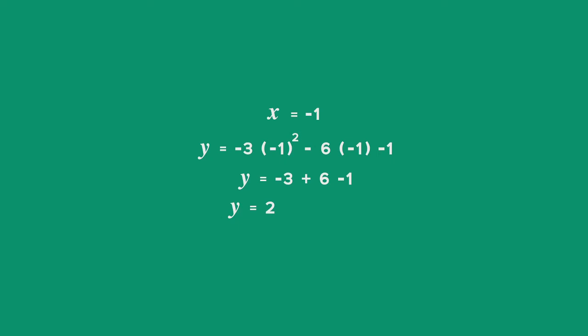Remember, you need to find the coordinates of the turning point written as an ordered pair of x and its corresponding y value. For this function p, the coordinates of the turning point are (-1, 2).